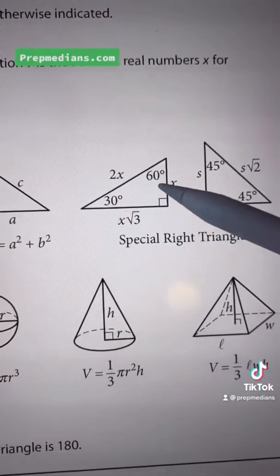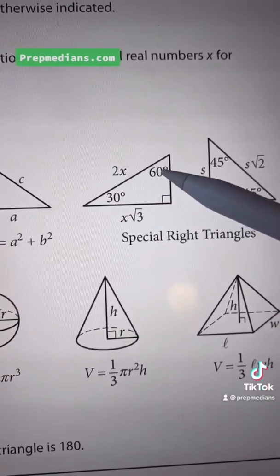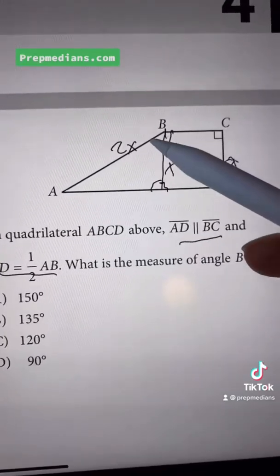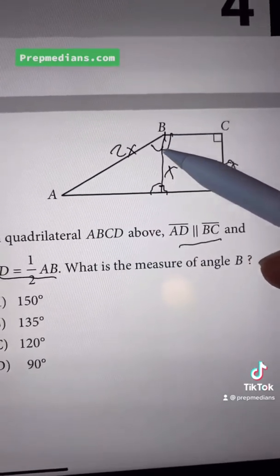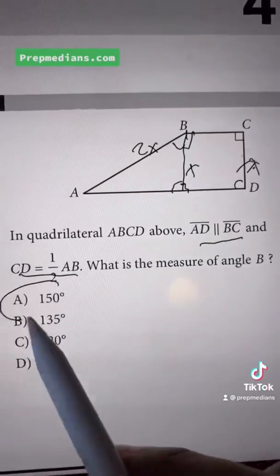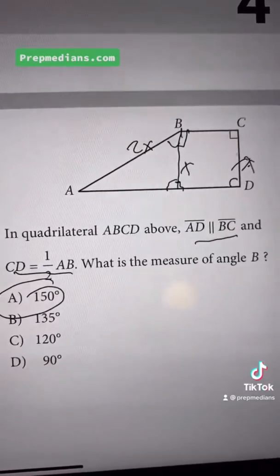That tells us that that triangle we just saw has a 60-degree angle up here. So if this is 60 degrees and this is 90 degrees, together, they are 150 degrees, which is our answer, A. Boom. Crush it, prepsters.